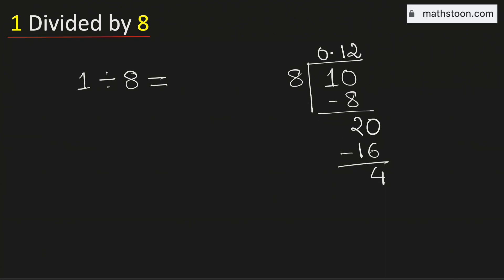Again see that 4 is less than 8, so we will again borrow 10 and we know that 8 times 5 is 40. Subtract, we get 0.